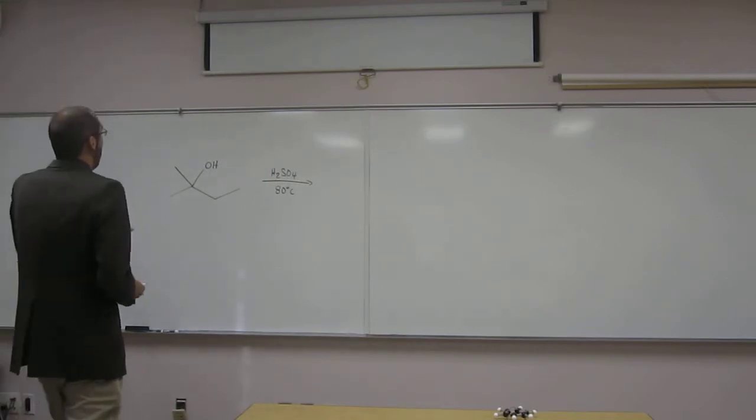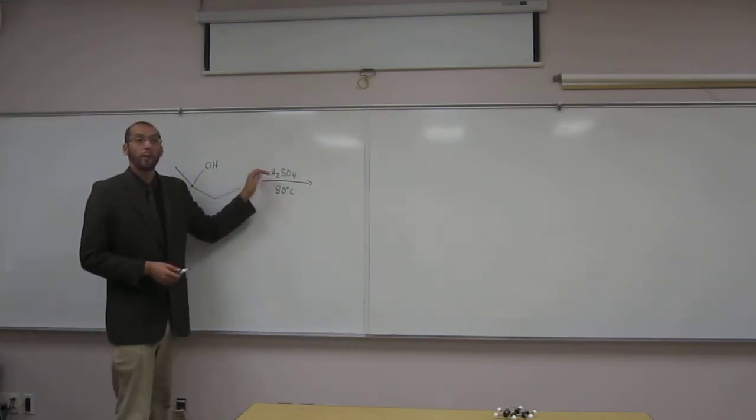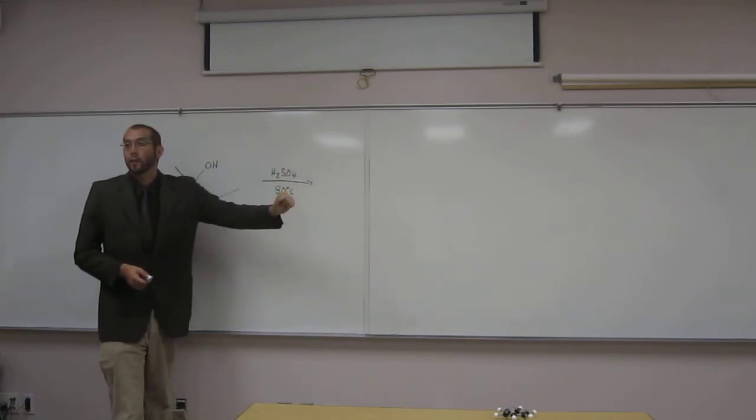OH is a bad leaving group. We're turning it into a good leaving group with the sulfuric acid, right? And we're going to get an alkene.